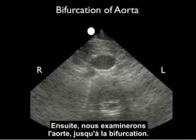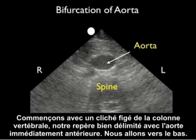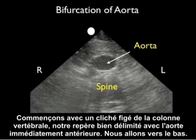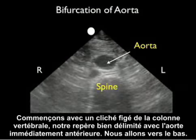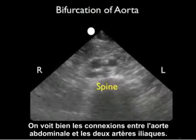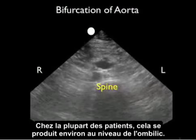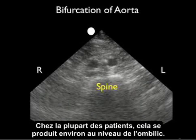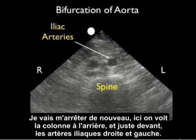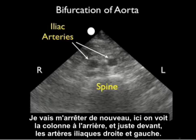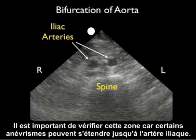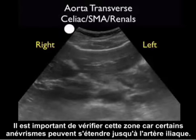Next we'll look at the aorta all the way down to the bifurcation. Beginning with a frozen image showing the spine — our pronounced hyperechoic landmark — and the aorta just anterior, we scan inferiorly and notice the abdominal aorta branching into the paired iliac arteries. This bifurcation usually occurs at about the level of the umbilicus, and it's important to evaluate as some aneurysms extend into the iliac arteries.